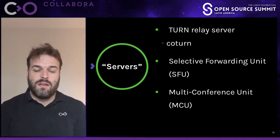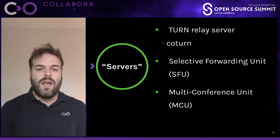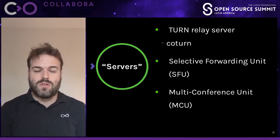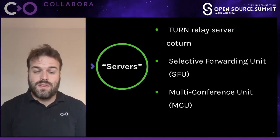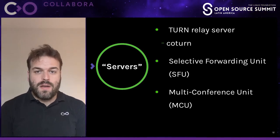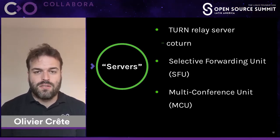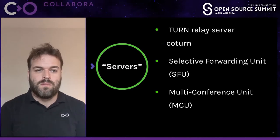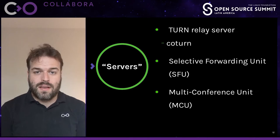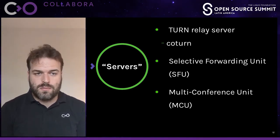There is a relay server option, which is called TURN. There are a couple of open source implementations, but the most popular is coTURN. It's very scalable and doesn't take much resources from the computer. In our experience, we fill the bandwidth way before any other resource becomes a problem. TURN is the main kind of media-agnostic server — it doesn't know anything about the content, it just forwards packets.